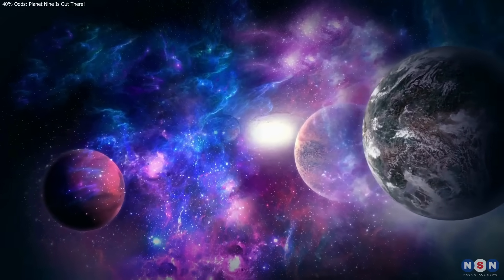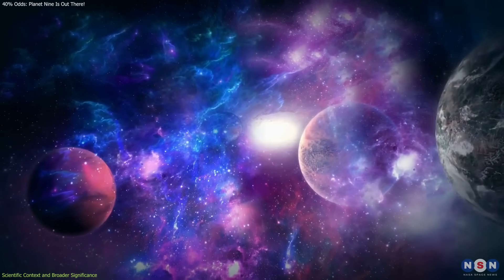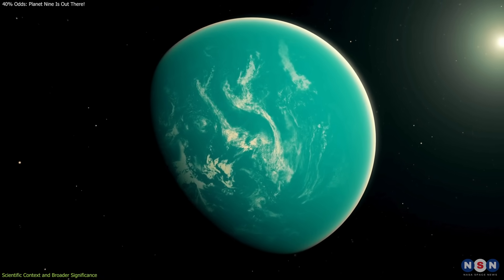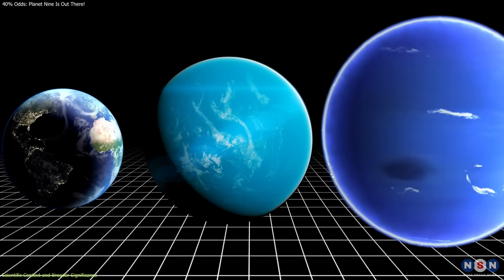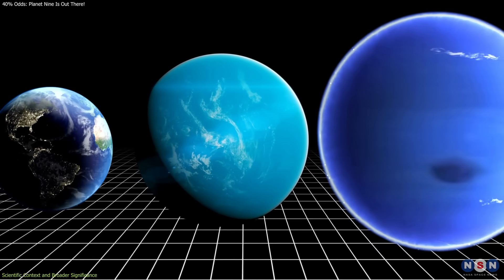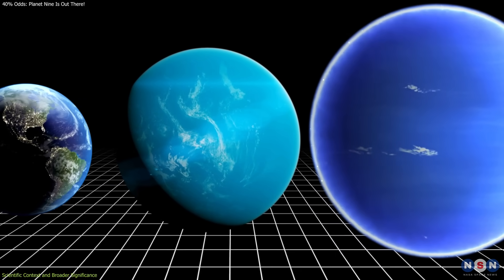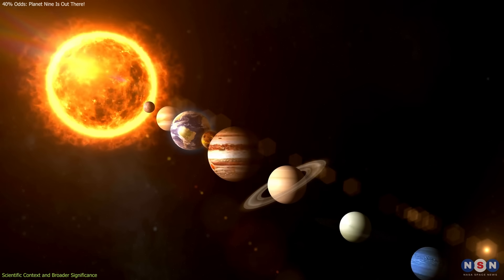One of the enduring puzzles in planetary science is the existence of super-Earths in other star systems. These planets, larger than Earth, smaller than Neptune, are common in exoplanet surveys.